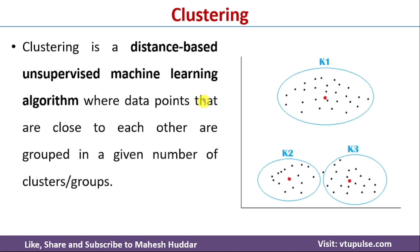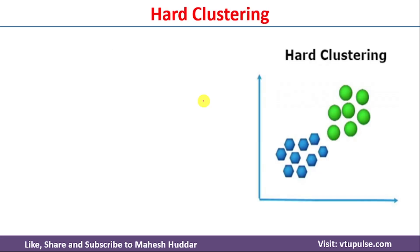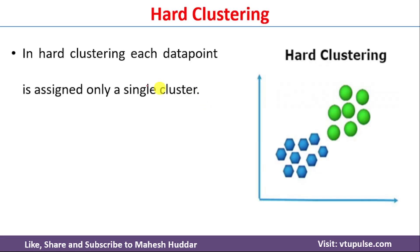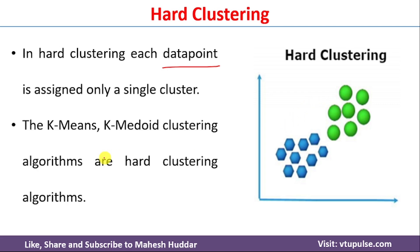There are mainly two types of clustering algorithms. The first one is known as hard clustering. In hard clustering, each data point is assigned to a single cluster. If you notice in this example, the given data set is divided into two groups and each of these data points either belongs to one of those clusters. K-means and k-medoid are examples of hard clustering algorithms.